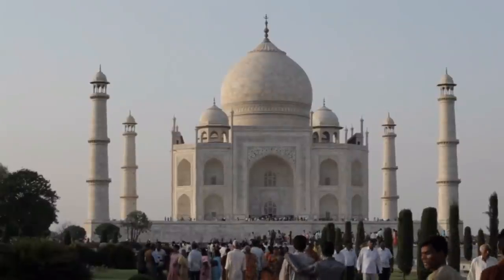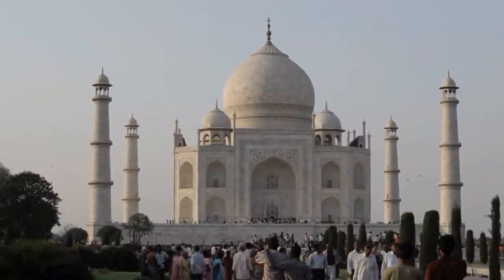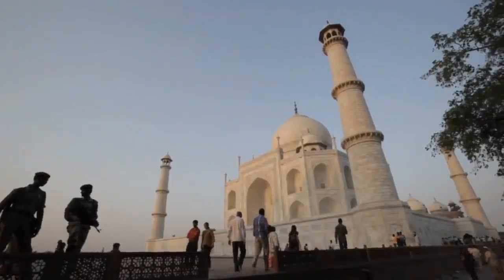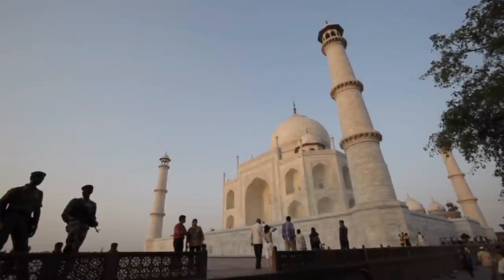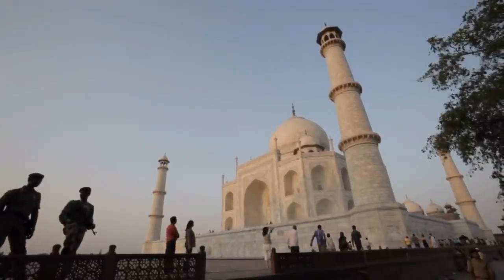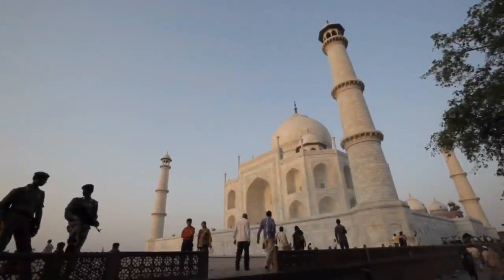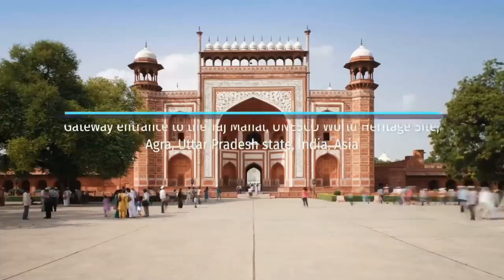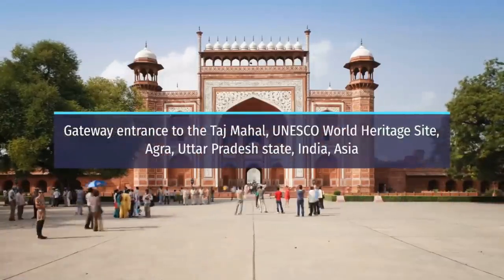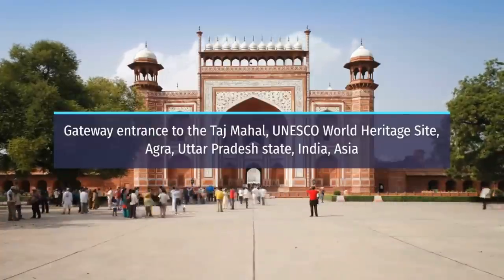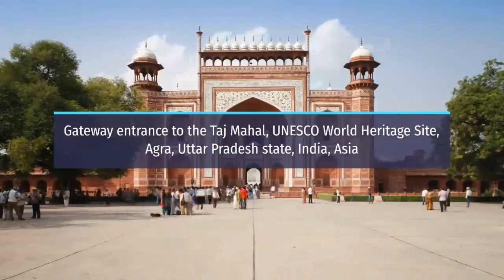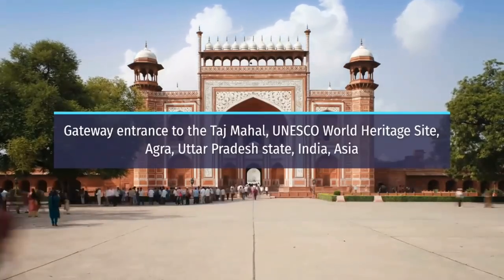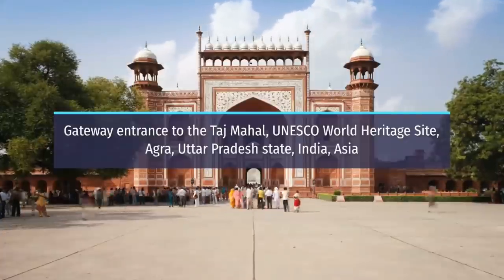Construction of the mausoleum was essentially completed in 1643, but work continued on other phases of the project for another 10 years. The Taj Mahal complex is believed to have been completed in its entirety in 1653 at a cost estimated at the time to be around 32 million rupees, which in 2020 would be approximately 70 billion rupees, about US $956 million. The construction project employed some 20,000 artisans under the guidance of a board of architects led by the court architect, Ustad Ahmad Lahore.